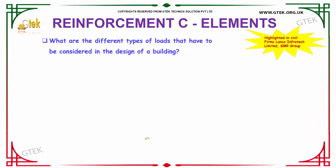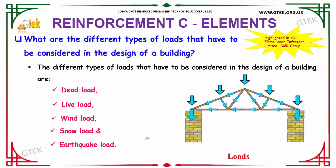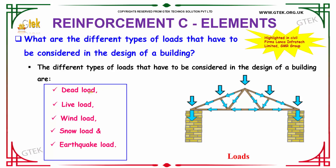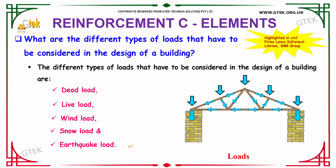Our next question is: what are the different types of loads that have to be considered in the design of a building? The different types of loads include Dead load, Live load, Wind load, Snow load, and Earthquake load. So these are the different types of loads to be considered in the design of a building.